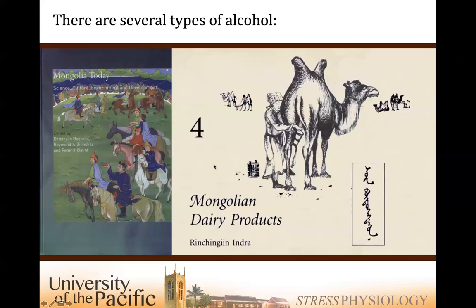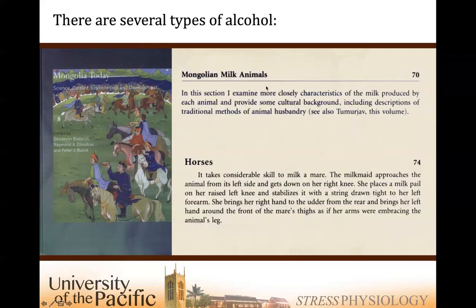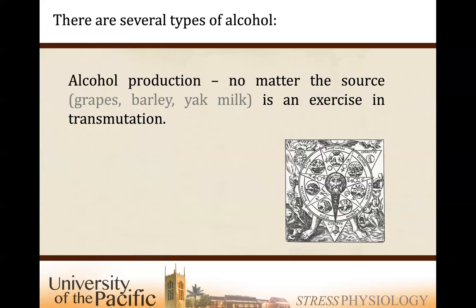The Mongols milk yaks, milk camels. Here's our airag — mare's milk. From this book: 'It takes considerable skill to milk a mare' — favorite line in the book. No matter the source, you can make booze from milk, grapes, honey, barley. Take a different form of food, allow it to ferment, allow yeast to work on that substrate, and suddenly you have a different name for your alcohol. Is it yak milk, barley, or grapes? Then we get our alchemy, our alcohol from that.